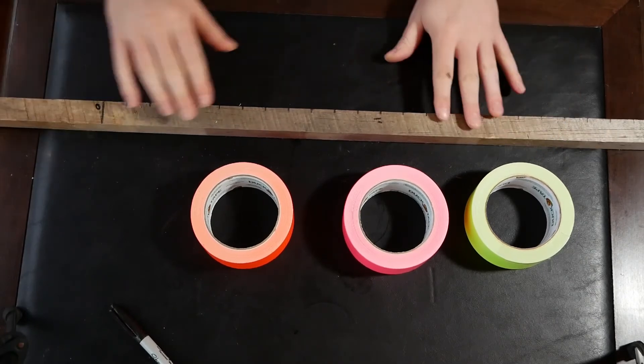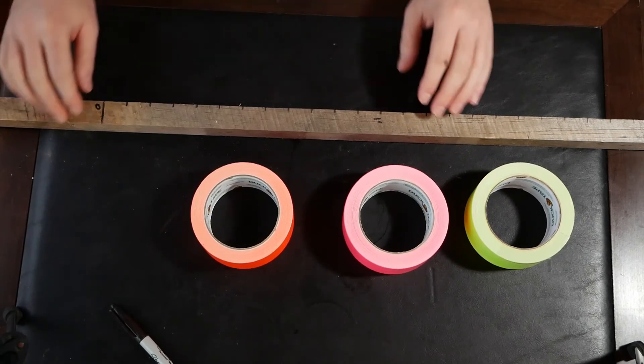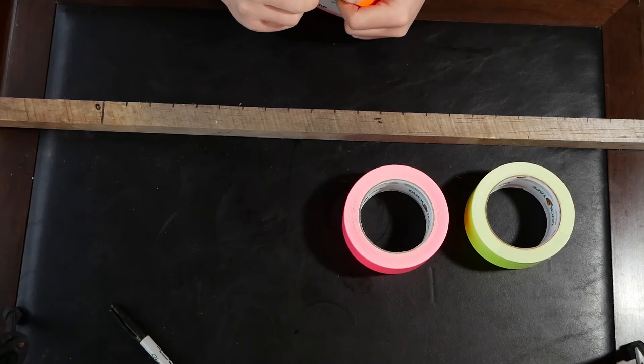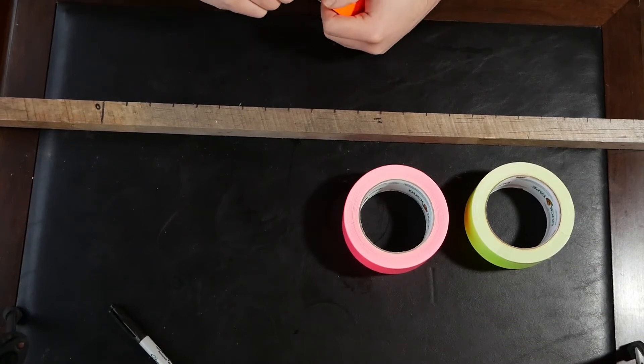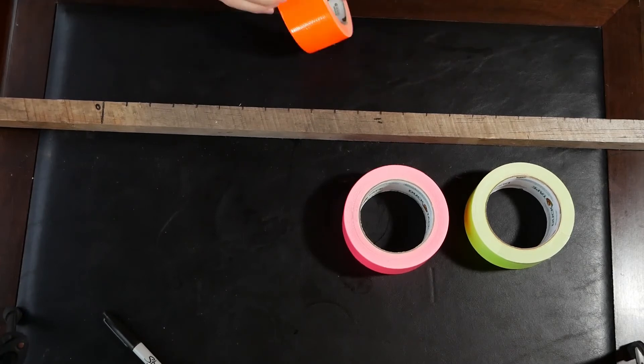So what I'm gonna do, I'm not gonna cover up the markings because it's still useful to be able to see them. But I'm going to take a piece of each of my different colors of duct tape and I'm gonna alternate. So I'm gonna go orange, pink, green, orange, pink, green, in that order all the way up the stake.